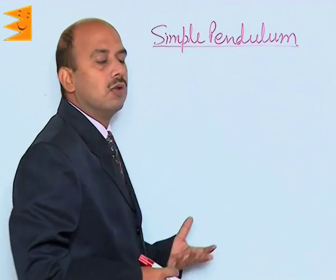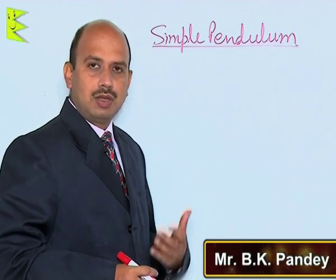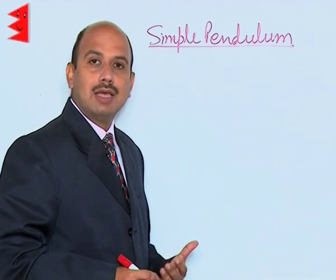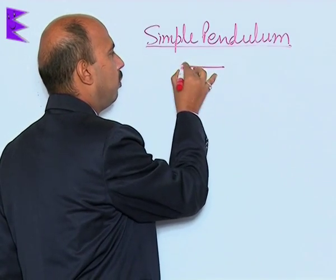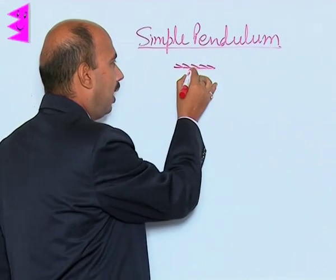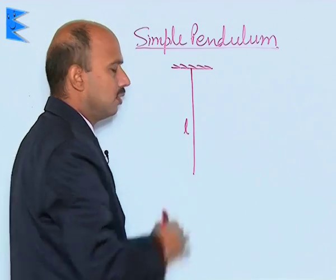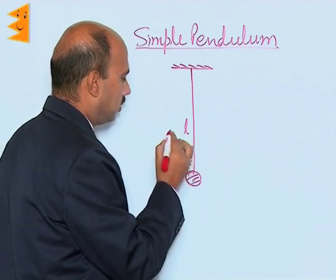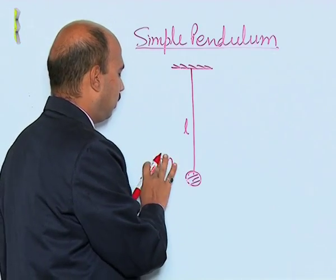See here a simple pendulum — you can do this experiment in your lab also. We have to calculate the time period of a simple pendulum. Suppose this is the suspension point, or the rigid support, and a thread is taken of length L, and there is a bob here of mass m. This is the equilibrium position.